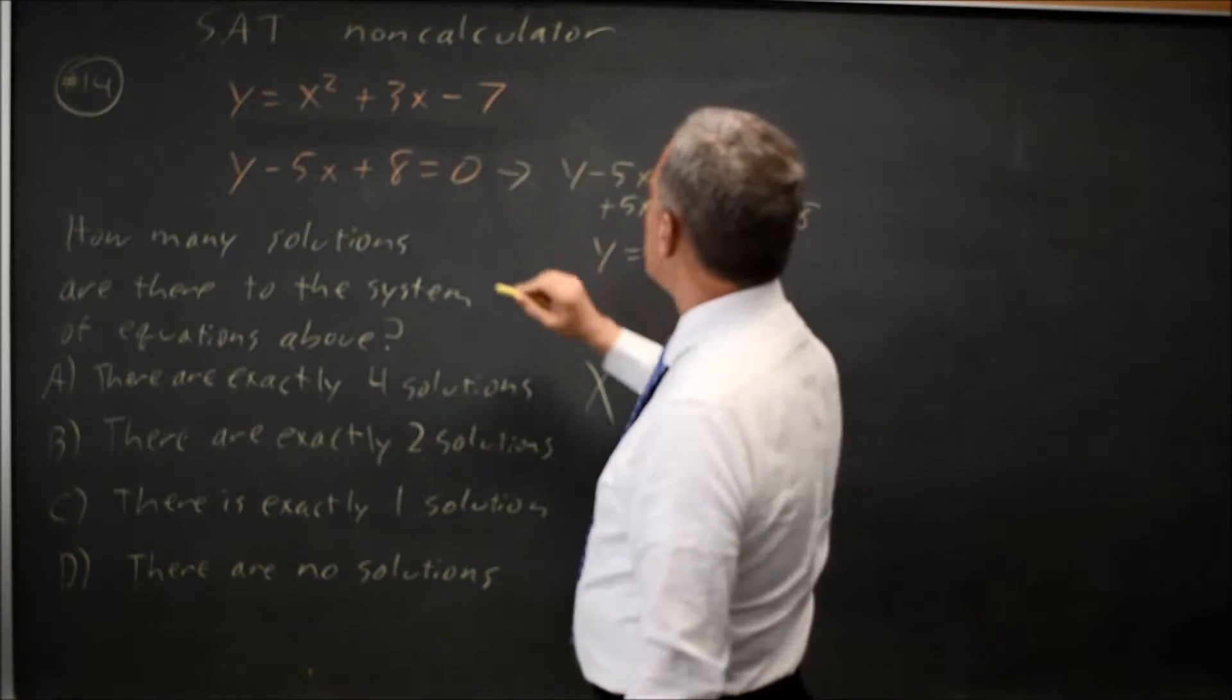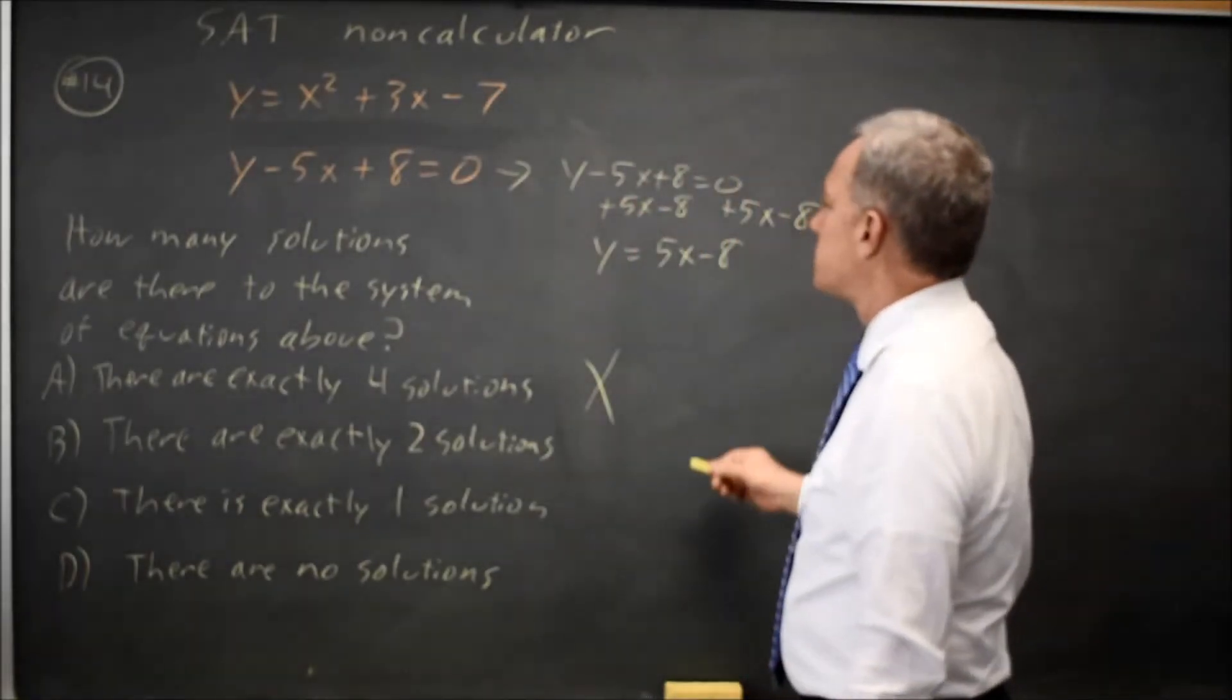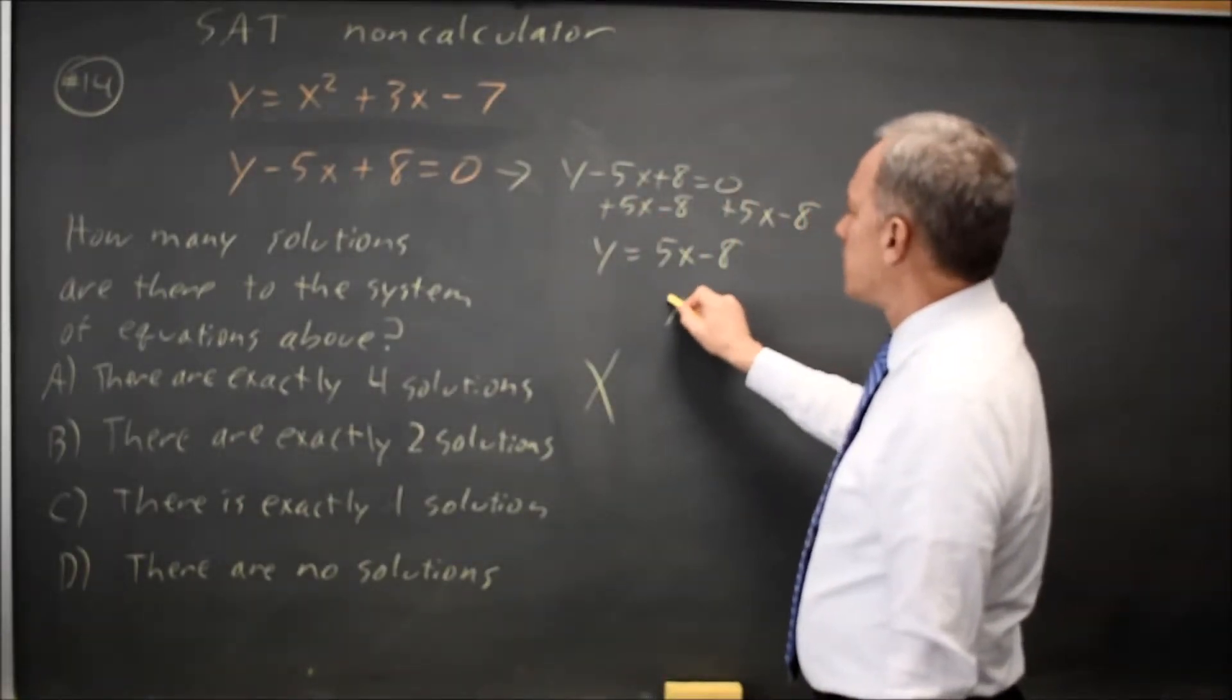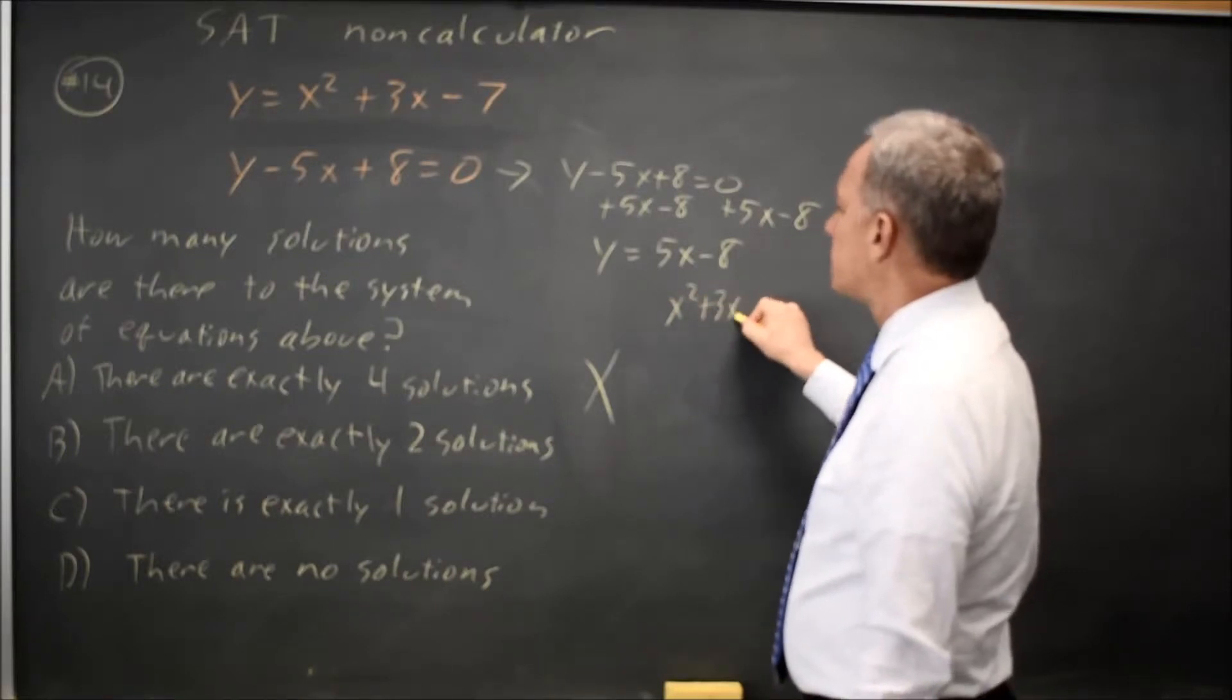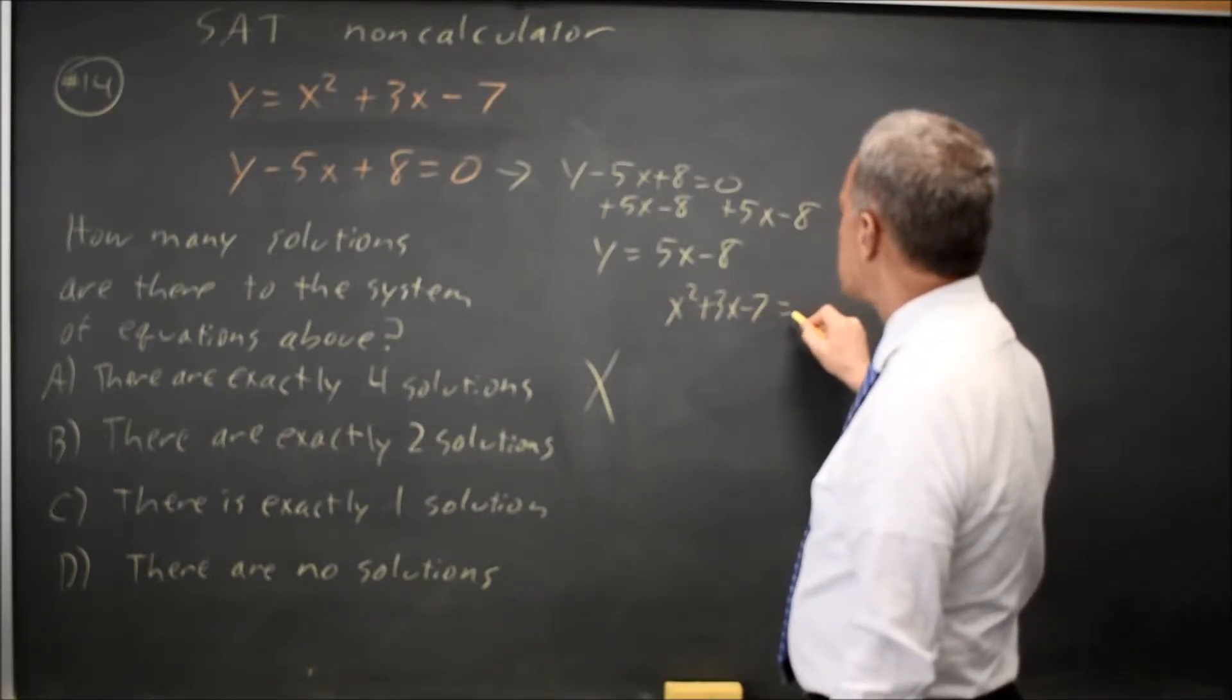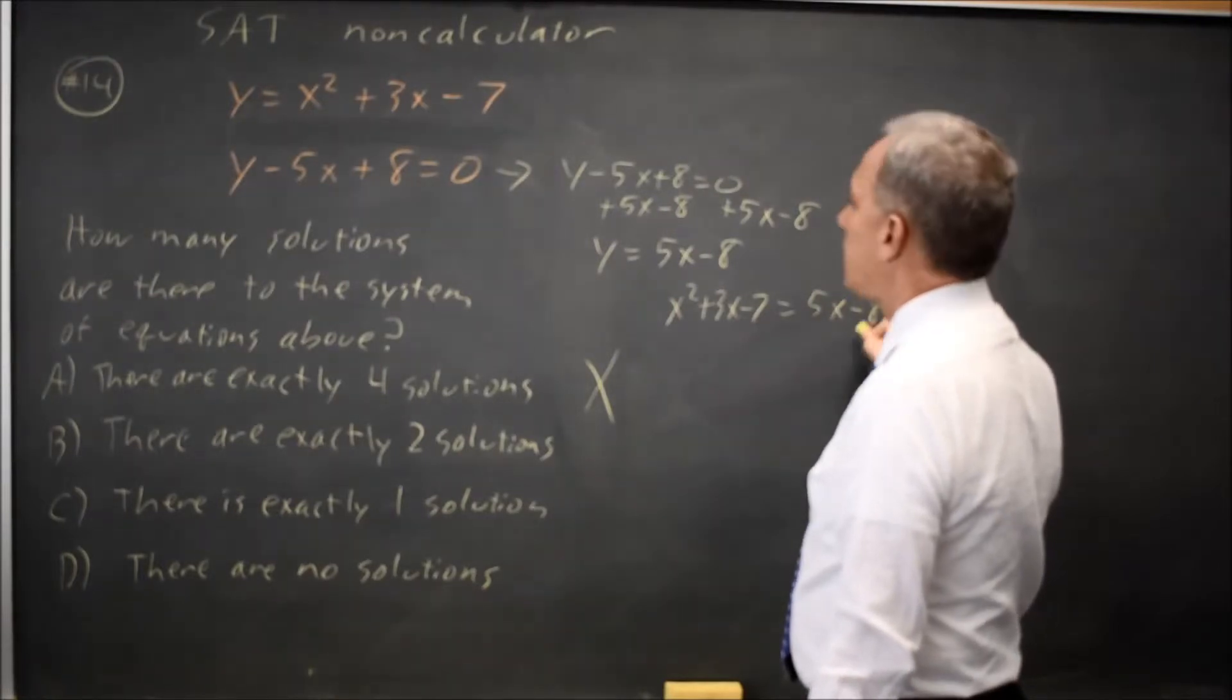Over here, I have y equals a quadratic, so I'll set those two y expressions equal to each other. So x squared plus 3x minus 7 equals 5x minus 8.